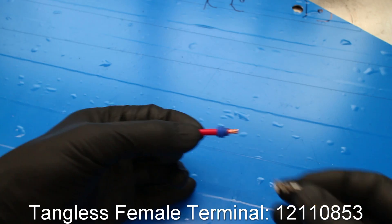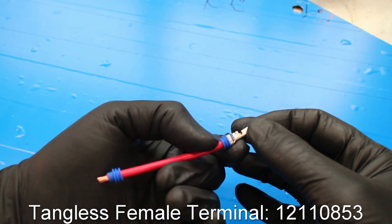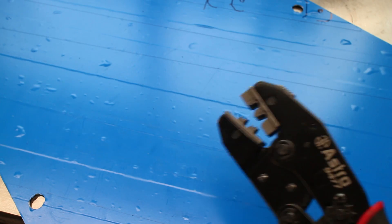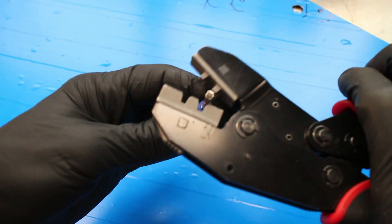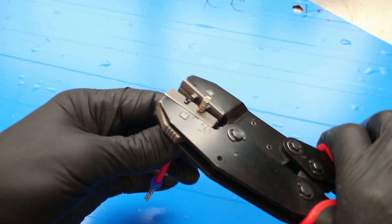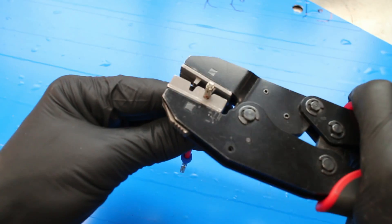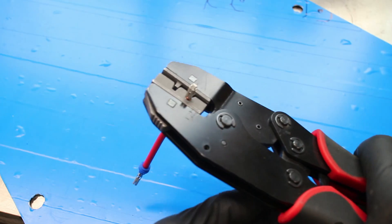Next, the tangless female terminal goes on. You will need a wire crimper for this. These jaws are for a METRIPAK 280 plug. These crimpers were about $100 off Amazon for a set that came with a bunch of different jaws. The crimp locks down the wire and the seal.